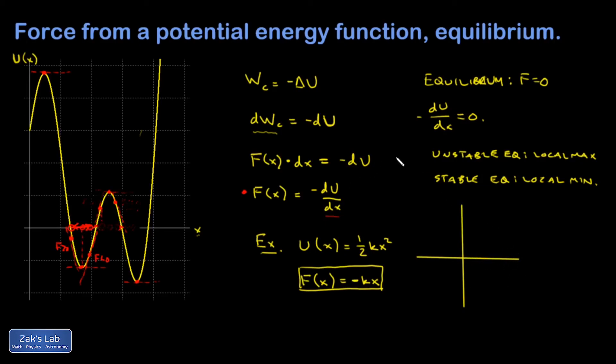Let me draw a decent parabola here. U = 1/2 kx² is a parabola passing through the origin, pointing up. At x = 0, we have a stable equilibrium point. Any displacement to the right of that equilibrium point gives me a positive slope on the potential energy function, which gives me a negative force. Similarly on the other side - negative slope, positive force. This is why a mass connected to a spring gives you oscillations.